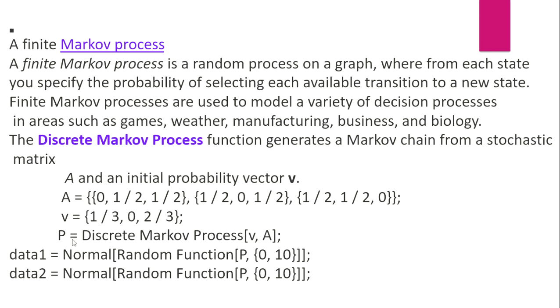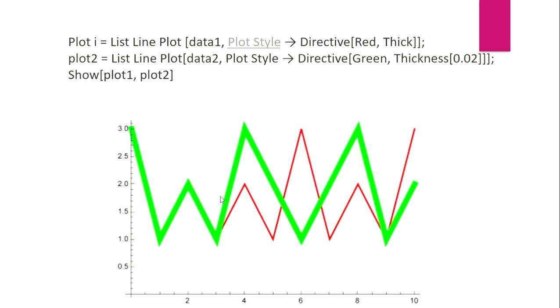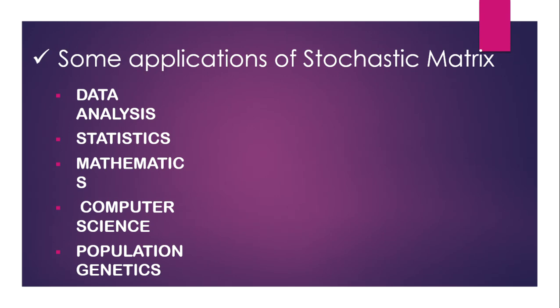This is the graph shown below, the graphical stochastic matrix of Markov chain. These are some applications of stochastic matrix. The stochastic matrix is used in data analysis, statistics, mathematics, computer science, and population genetics.